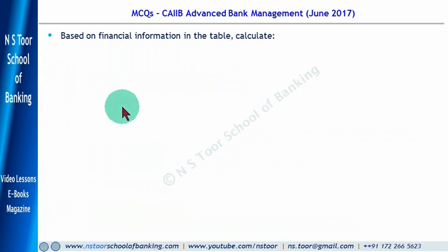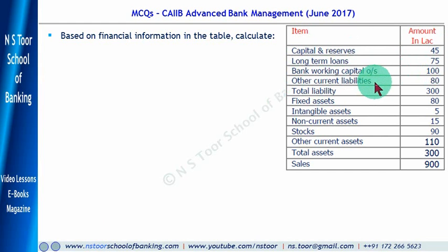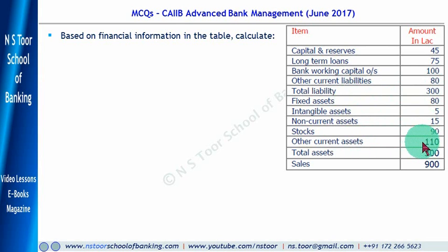The next question is based on financial information in the table. We have a table with basic financial information: Capital and reserves 45 lakhs, Long term loans 75, Bank working capital outstanding balance 100, Other current liabilities 80, Total liabilities 300. Fixed assets 80, Intangible assets 5, Non-current assets 15, Stocks 90, Other current assets 110, Total assets 300, and Total sales 900.